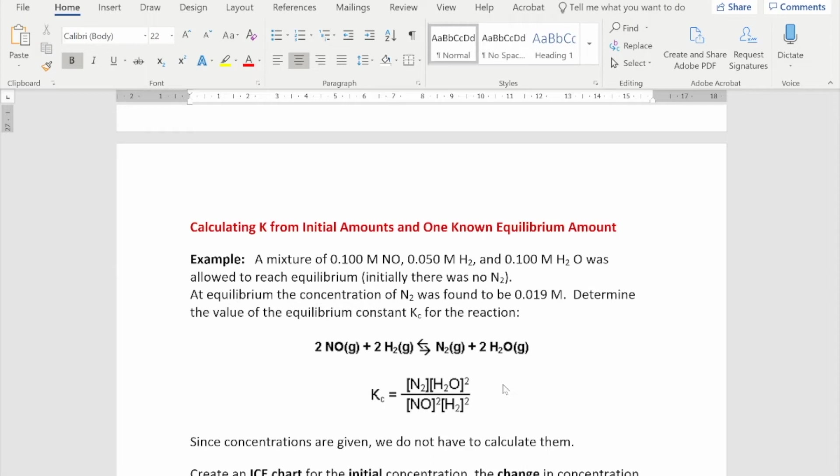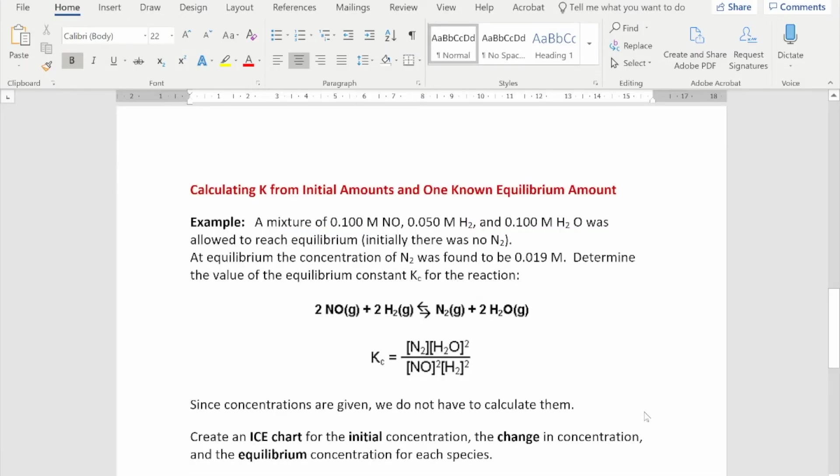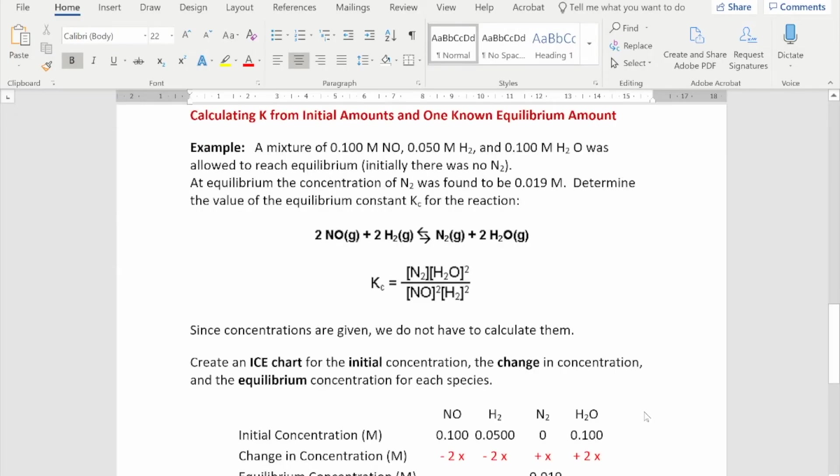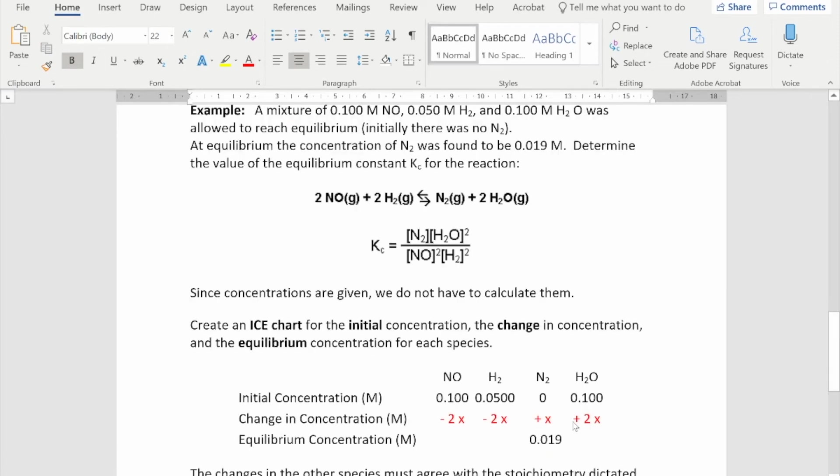So the ICE chart effectively is going to give you the initial concentrations. Initially, there was 0.1 moles per liter of NO, 0.05 moles per liter of H₂, 0 of nitrogen, and 0.1 of H₂O. At equilibrium, we are told that nitrogen became 0.019 moles per liter. So if we let that value be X, then as nitrogen goes up by X, H₂O will go up by 2X, because the equation says so. Each of the reactants will go down by 2X. Again, you must obey the stoichiometry of the equation.